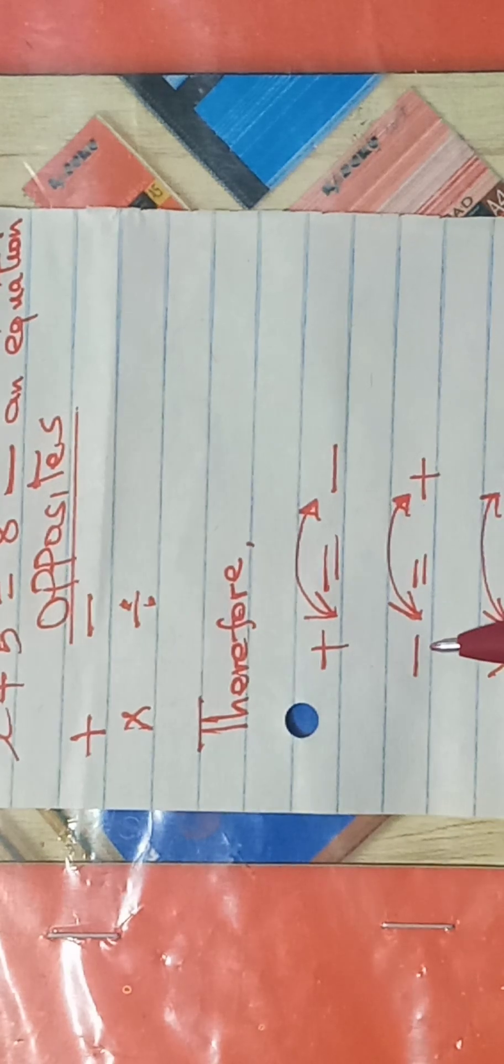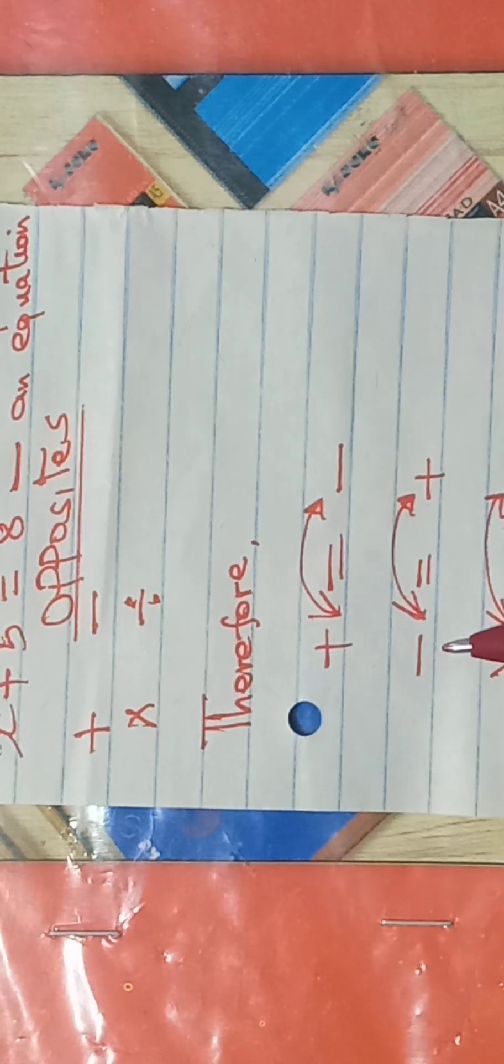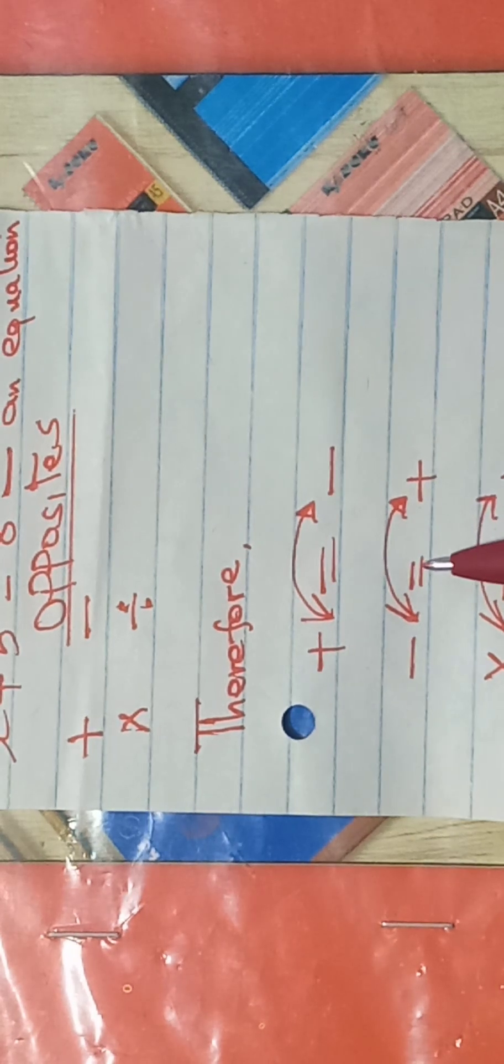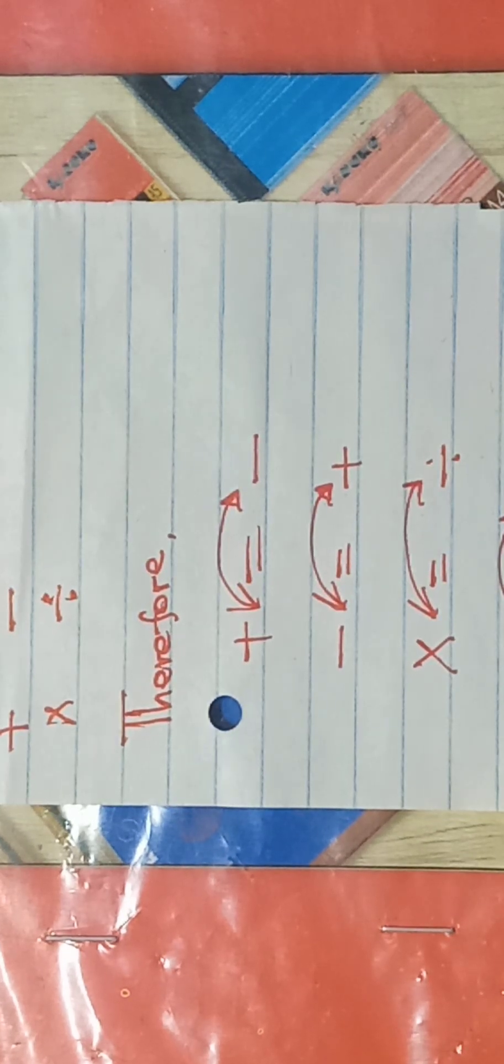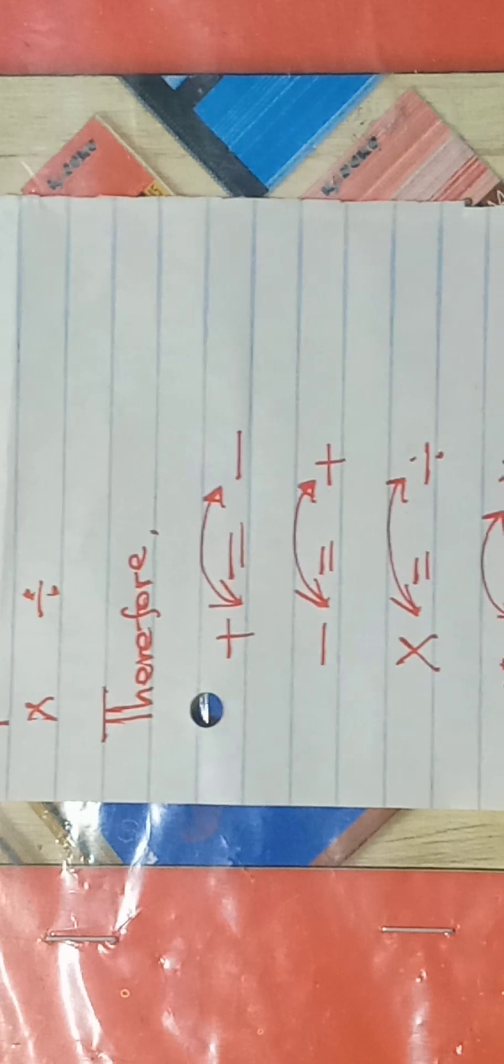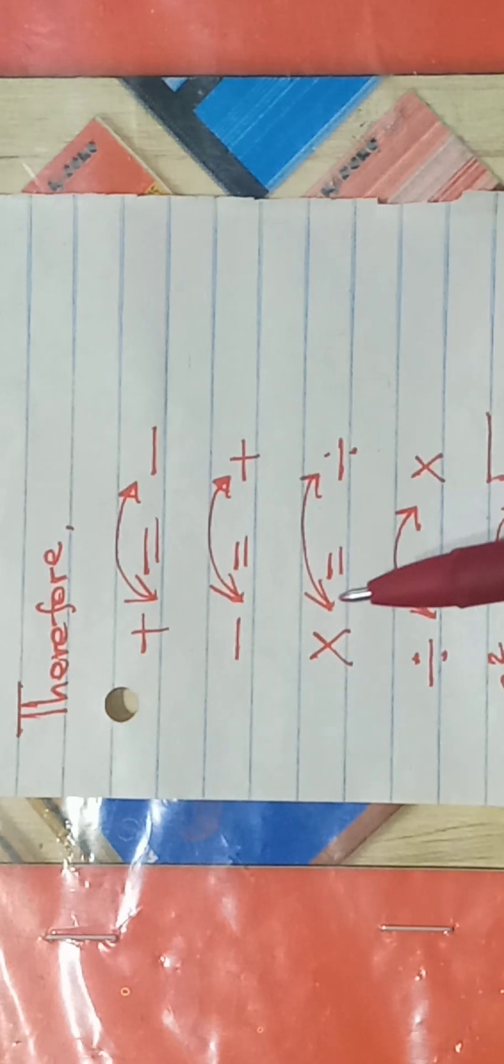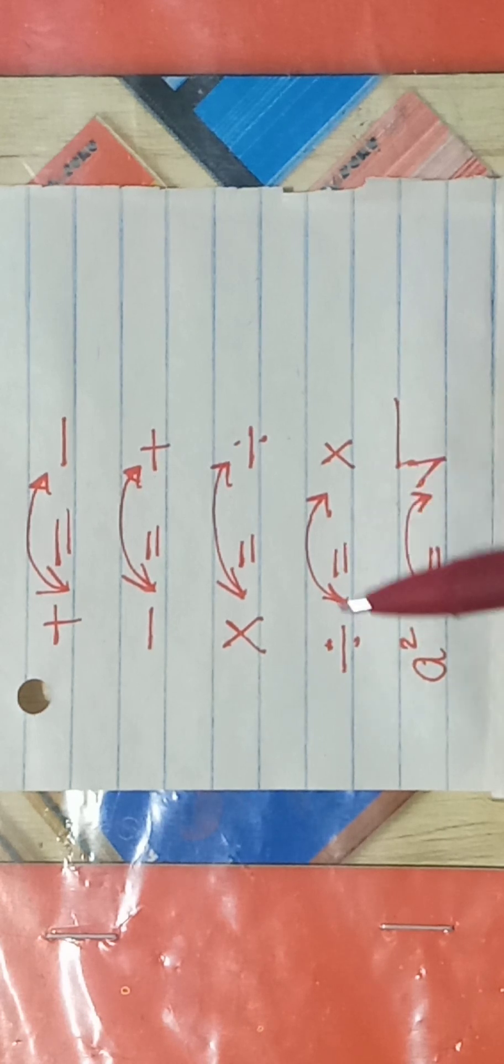If a subtraction was on the other side of the equation and it crosses the equal sign, it changes to addition. If it was a multiplication on the other side and it crosses the equal sign, it changes to a division. If it was a division on the other side and it crosses the equal sign, it changes to multiplication.